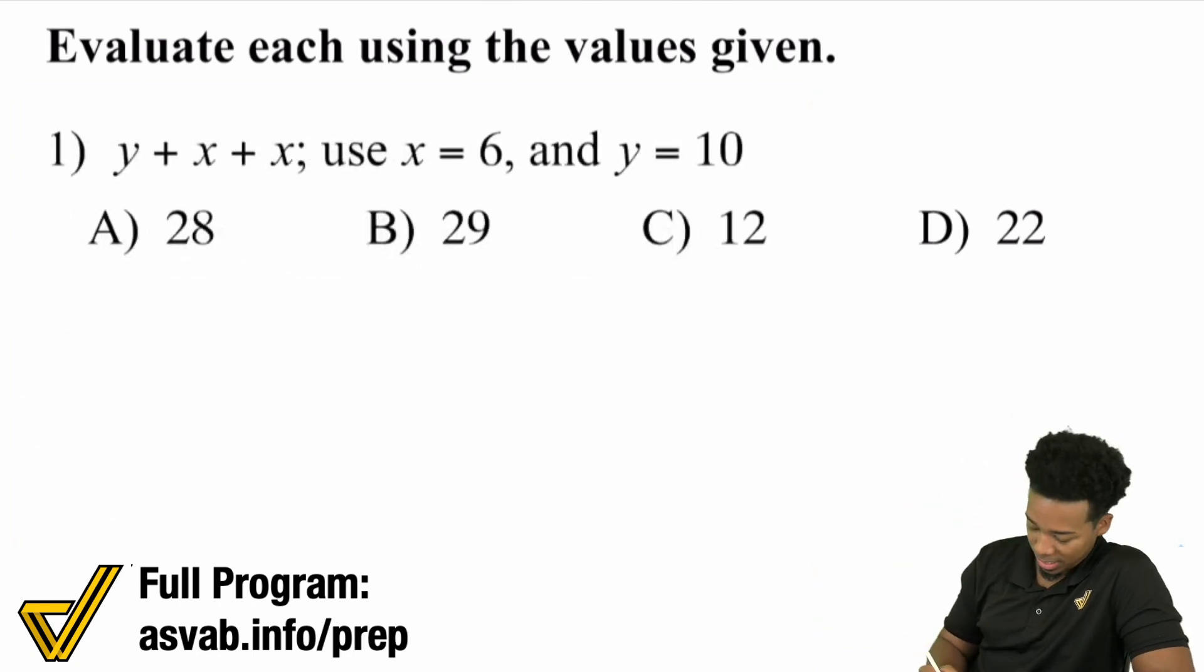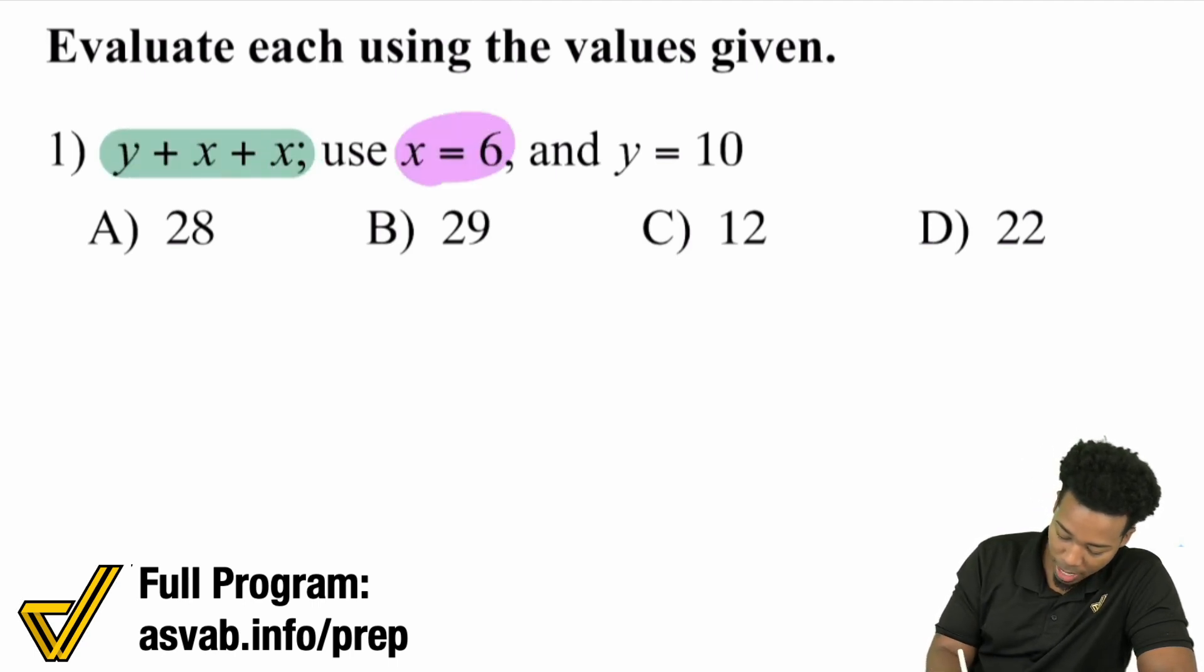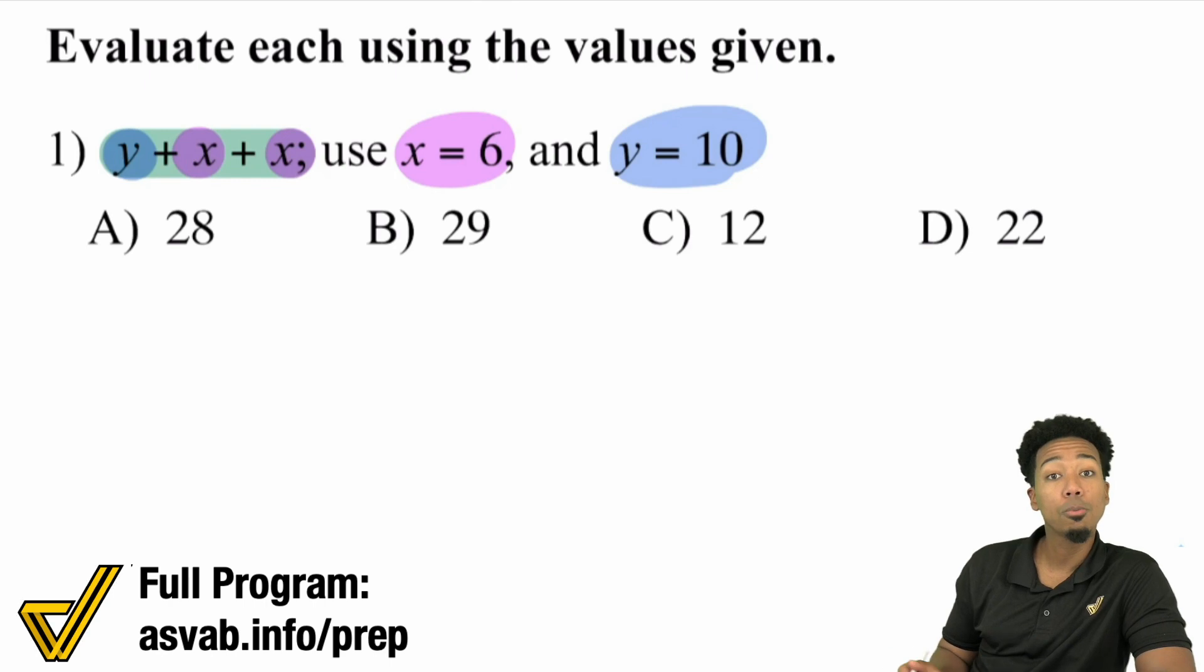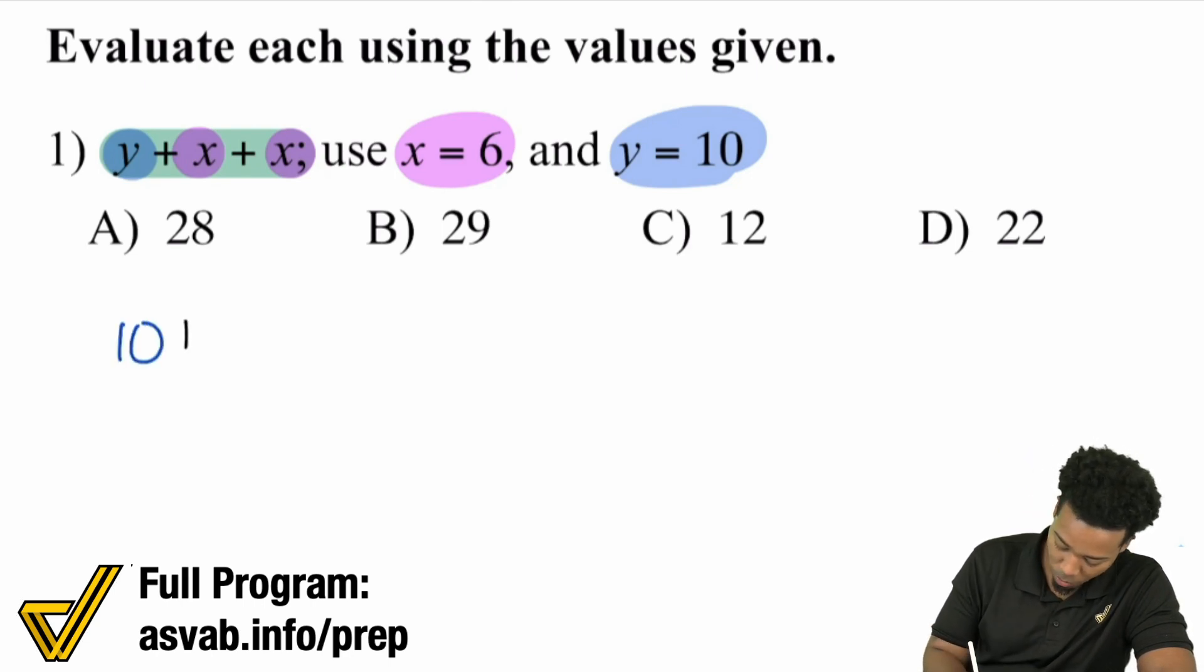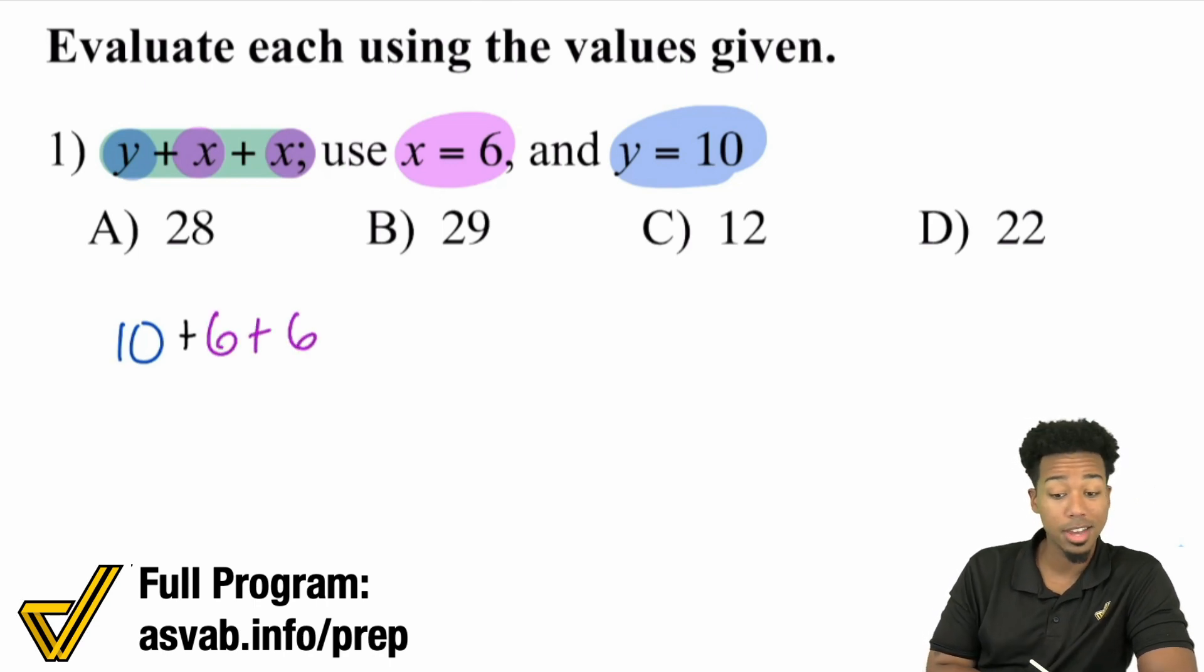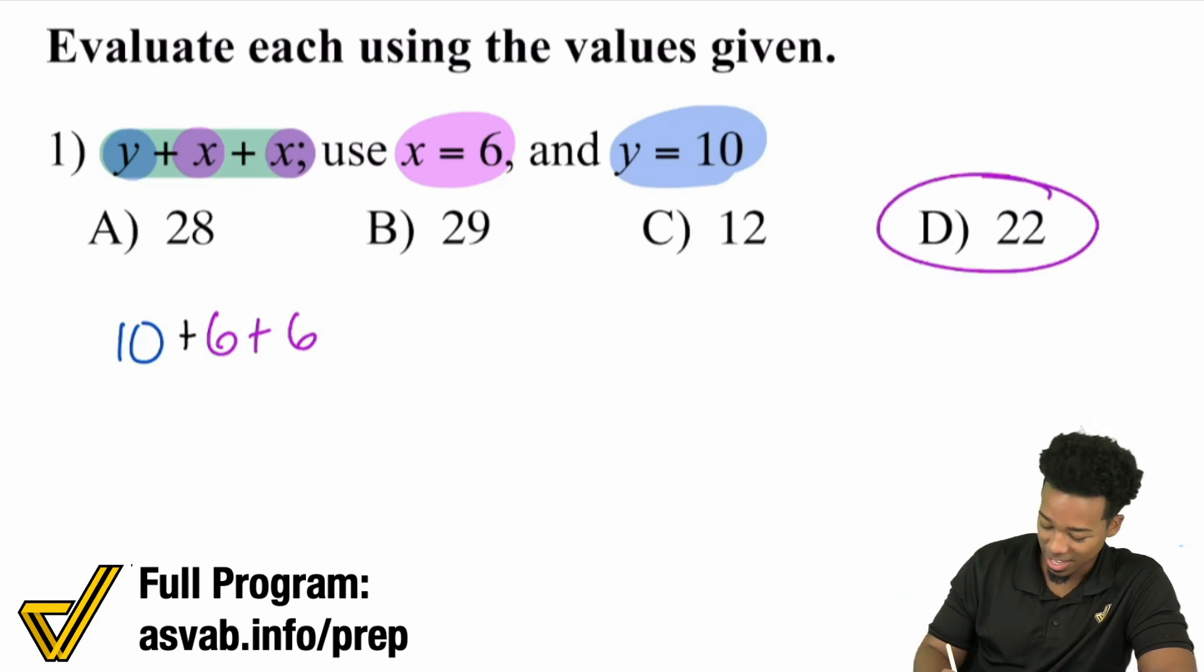We have y + x + x. We're told x = 6 and y = 10. We'll plug those numbers in for those letters, for those variables, plug them in, solve, and you're done. Y is 10, then we're adding the x's, and we have 6's both ways. Now all you're going to ask yourself is, what's 10 + 6 + 6? 10 + 6 is 16, plus 6 is 22, and you're all done. It is really that straightforward.